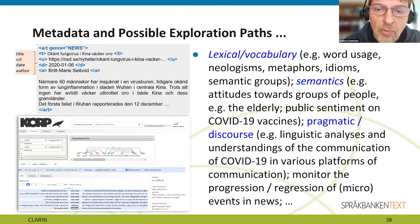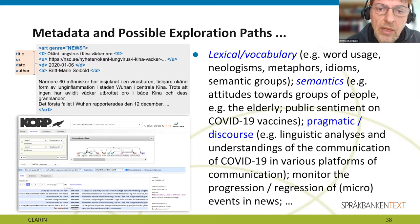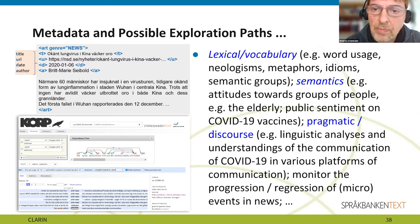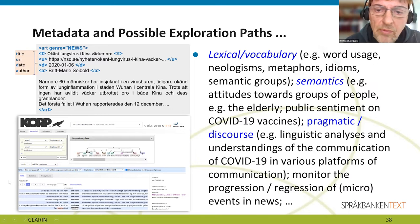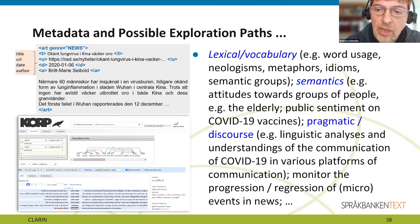We enriched the corpus with a small number of metadata fields, including a zone label for each article. The metadata covers the title, URL, source, publication date, and article authorship where available. There are various means to explore the corpus using the KORP tool. Possible deeper investigations include vocabulary analysis such as compound analysis, neologisms, or metaphors; exploration of semantic dimensions like attitudes toward certain groups such as the elderly; sentiment on vaccination; and discourse phenomena and micro/macro events.